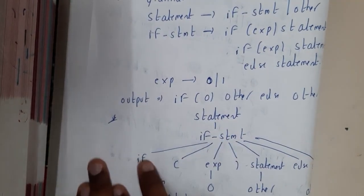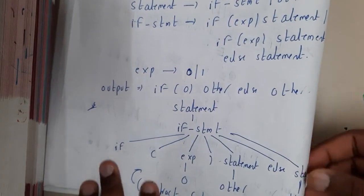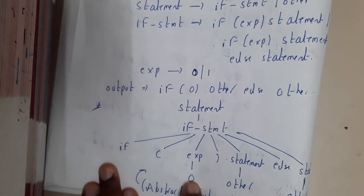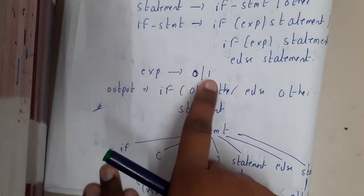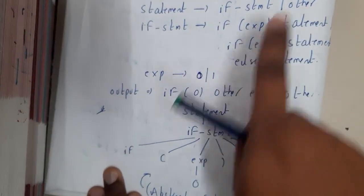If is divided into: if, open brace, expression, close brace, statement, else, and statement. Here in expression, we write zero—that is nothing but zero or one, which means true or false. In the statement, it is given other, so we substitute other in the statement.